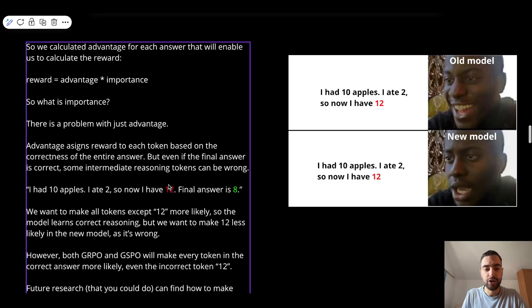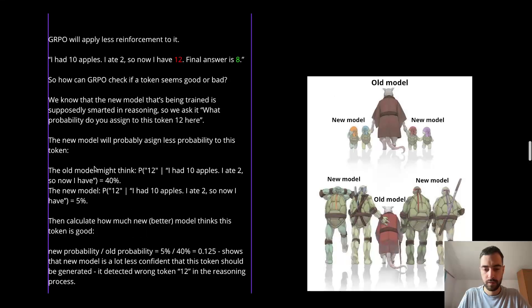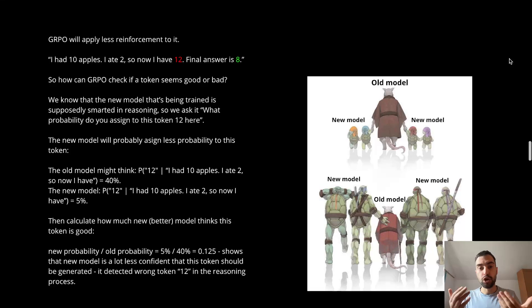Because it's gonna think, okay, this token is weird. Maybe it's wrong. I don't want to reinforce it as much. So how does it work? As you remember, we have the old model, the frozen model that was generating these answers, and the new model that we are training to become better. In the beginning, the new model was same as the old model, but now it's got better. Now it's better because we trained it and we are still training it.